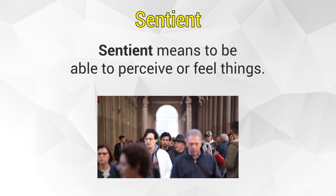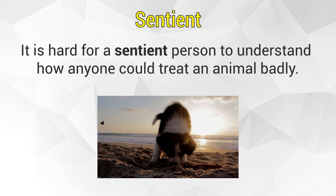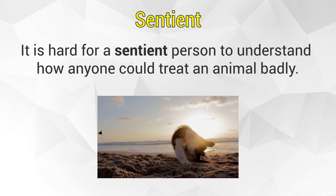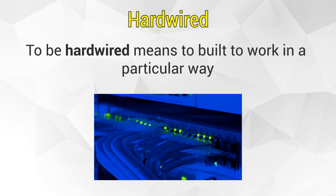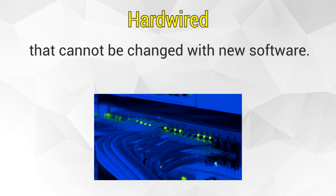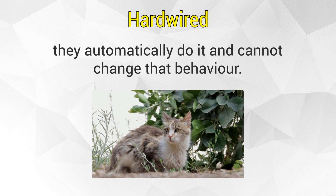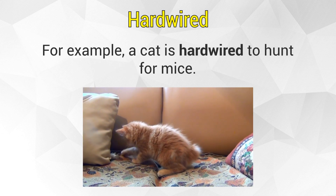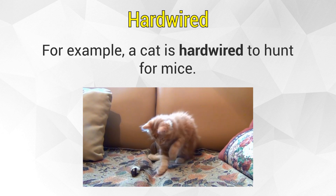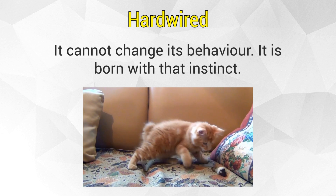Now 'sentient' means to be able to perceive or feel things. For example, it is hard for a sentient person to understand how anyone could treat an animal badly. To be 'hardwired' means to be built to work in a particular way that cannot be changed with new software. If someone or something is hardwired to do a particular thing, they automatically do it and cannot change that behaviour. For example, we could say a cat is hardwired to hunt for mice — in other words, it cannot change its behaviour; it is born with that instinct.